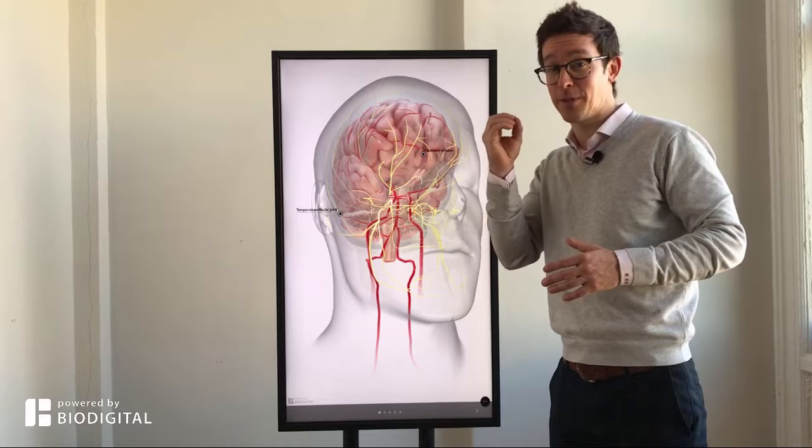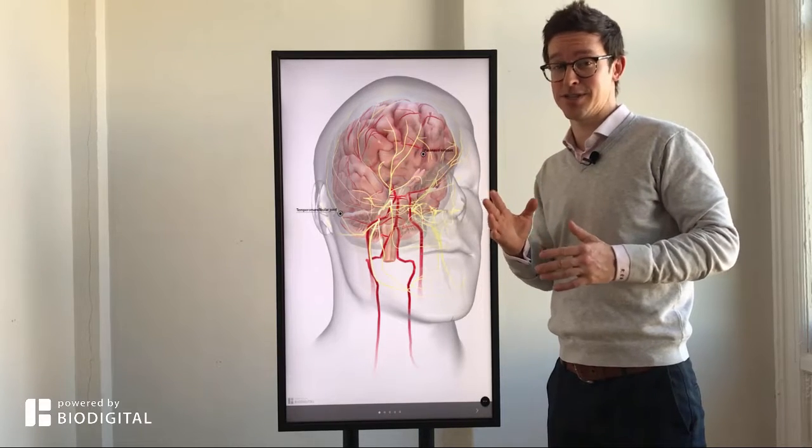Migraine is typically a one-sided, very painful, throbbing headache, which can be accompanied by symptoms like changes in your vision.